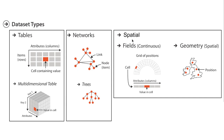With spatial datasets, these are datasets where there's an element of the data that maps onto the Earth in some form or another. One form could be position, where there's latitude and longitude points that could appear on a map. Another type deals with geographic identifiers, like countries or states. So these are the three broad dataset types: tables, networks, and spatial.